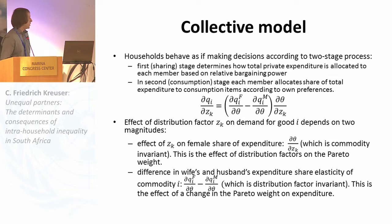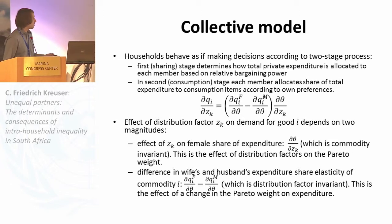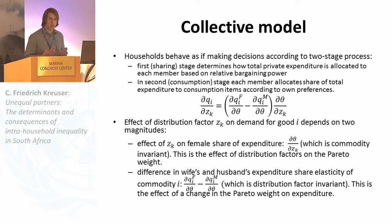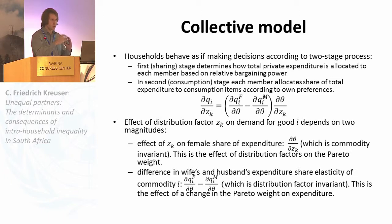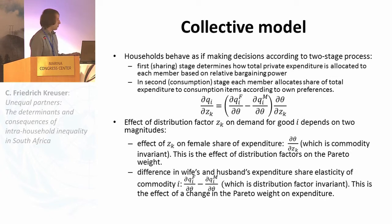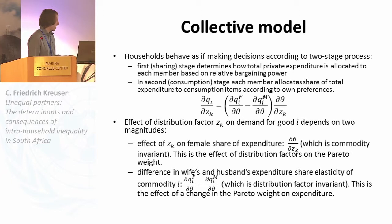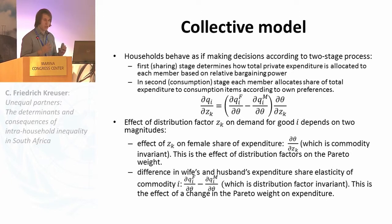A useful way to understand the collective model is that households behave as if making decisions according to a two-stage process. In the first stage, the household decides what proportion of expenditure is allocated to each member according to the Pareto weight. In the second step, individual demands for private goods are determined by this Pareto weight. The effect of female expenditure share is basically the change in the Pareto weight due to a change in the distribution factor, and the difference in the two shares due to changes in the Pareto weight is distribution factor invariance. We would expect this change to hold for all commodities and for all distribution factors.